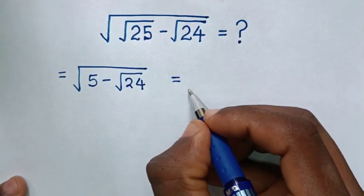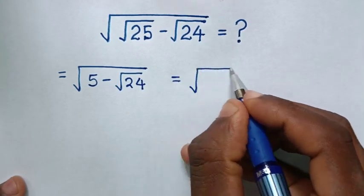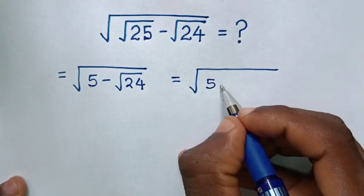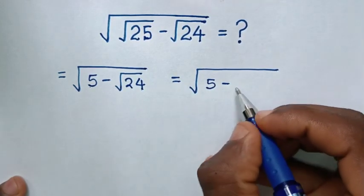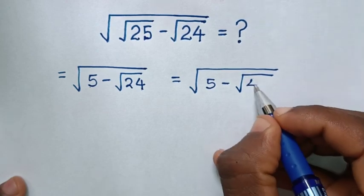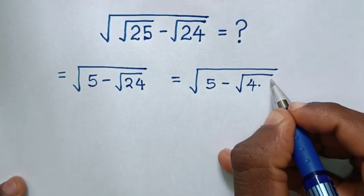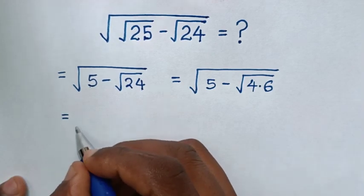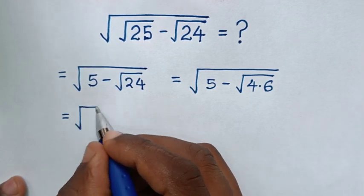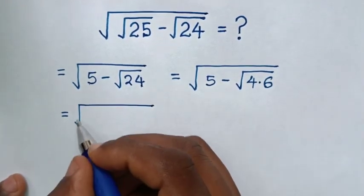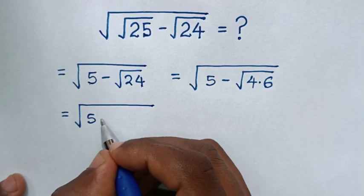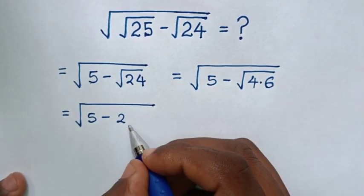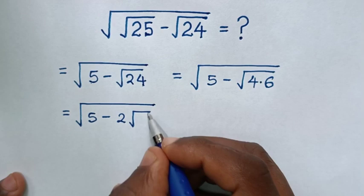Then it will be equal to square root of 5 minus square root of 24, which is the same as square root of 4 times 6. In the next step, it will be equal to square root of 5, then minus square root of 4 is 2, times square root of 6.